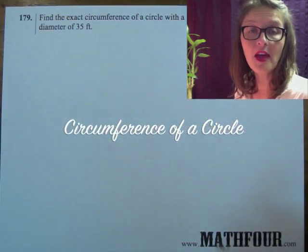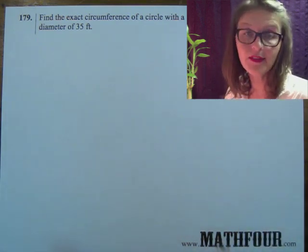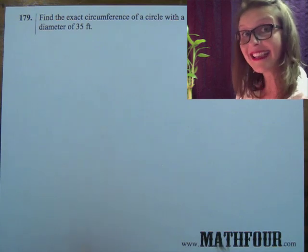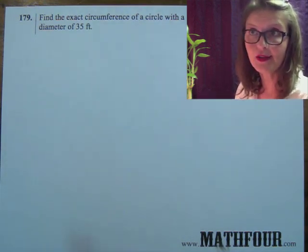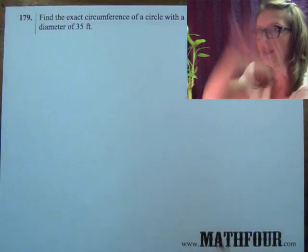Hi there, I'm Bon Crowder with Math4.com talking about circumference of a circle given a specific diameter. Now notice the question asks for the exact circumference. That's a little tricky because you're going, okay, so what do you mean exact? What's wrong with just saying find the circumference?